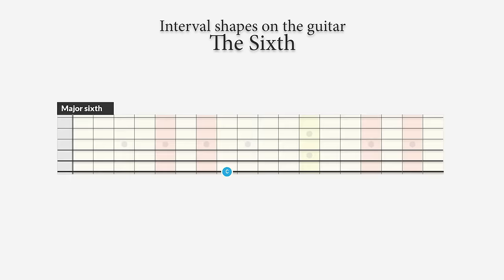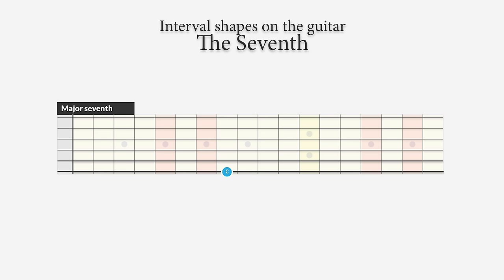The sixth is a wide interval that needs string skipping, just like the octave. When playing the root on the sixth or fifth string, find the major sixth one fret down and two strings up. Starting on the third or fourth string, find the sixth in the same position and two strings up. The minor sixth is simply found by going down an extra fret. The seventh is also a wide interval — on strings six and five, the major seventh is one fret up and two strings up. On the third string, go two frets up and two strings up. For a minor seventh, go up one fret less.